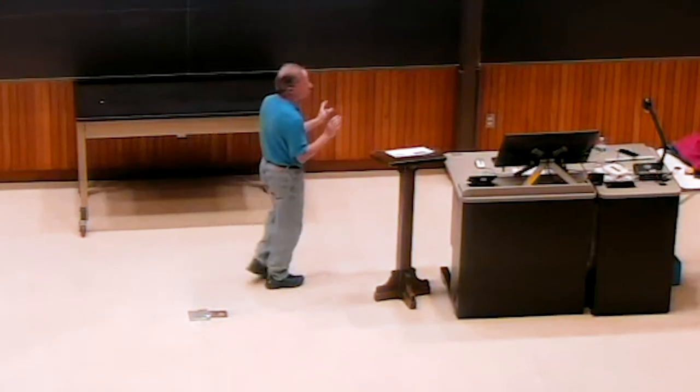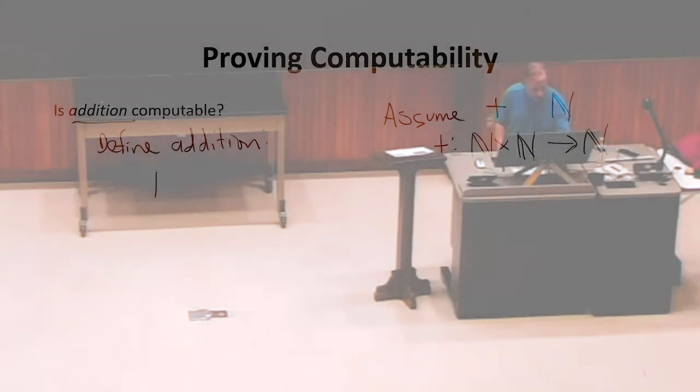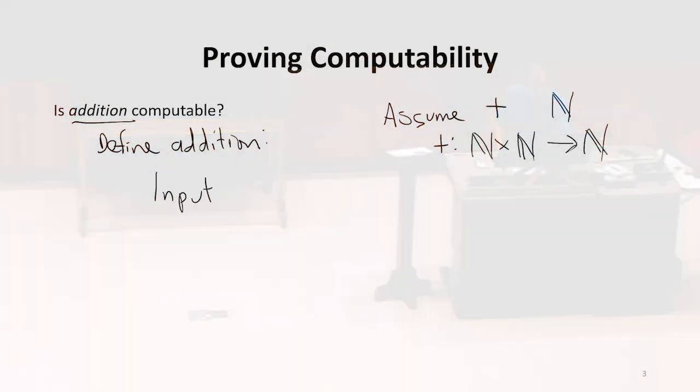If we're asking is it computable by a Turing machine, we've got to define it as a function that makes sense to a Turing machine. So we've got to say what the input is. What is the input to a Turing machine? Is it two natural numbers? It's got to be something that we can encode on a tape with a finite sequence of symbols.